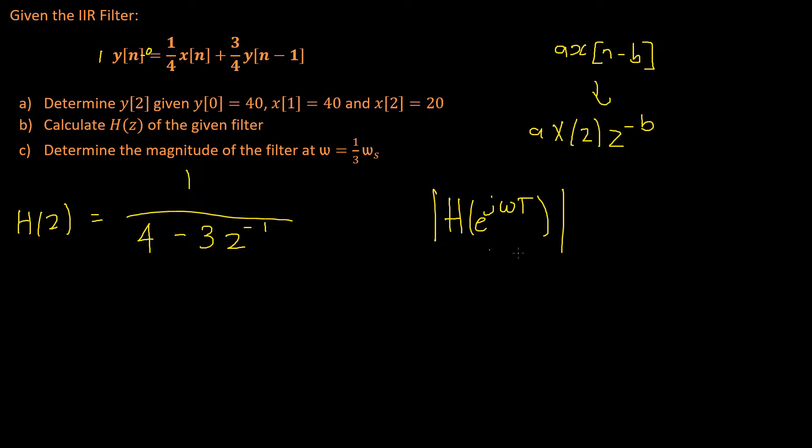Firstly, we need to remember that t, our sampling period, is equal to 2 pi divided by the sampling frequency omega s. So now we can continue.